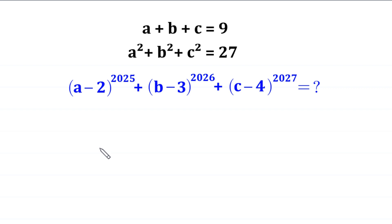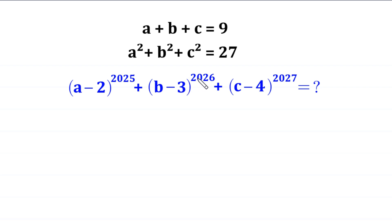Hello everyone, you are welcome to how to solve this very nice system of equations. a plus b plus c is equal to 9, and a squared plus b squared plus c squared is equal to 27. Our job is to find the value of a minus 2 to the power 2025, plus b minus 3 to the power 2026, plus c minus 4 to the power 2027.